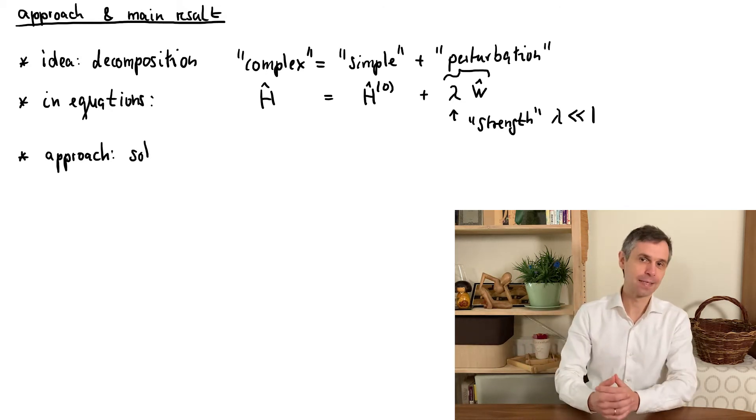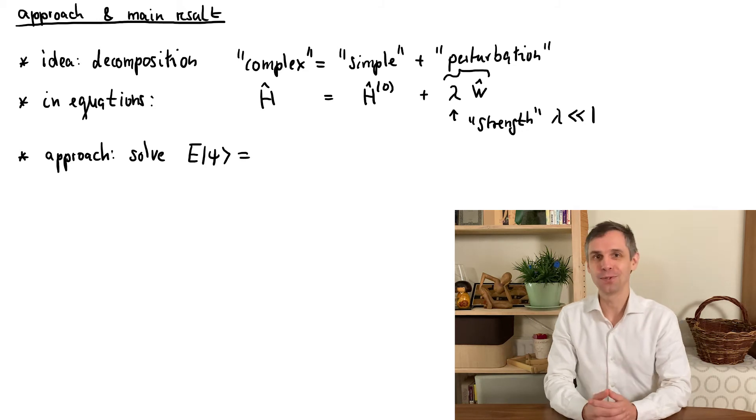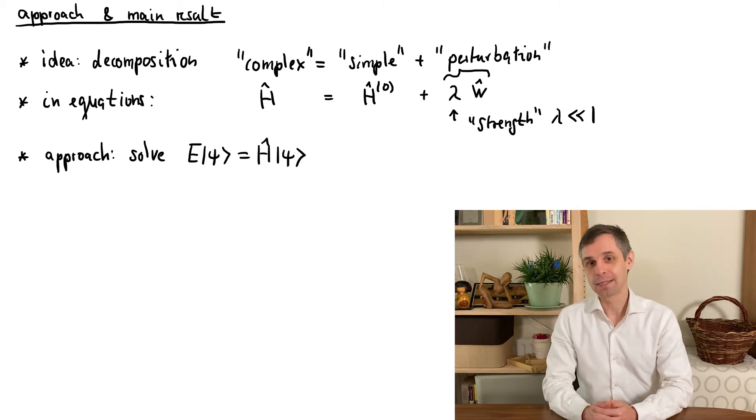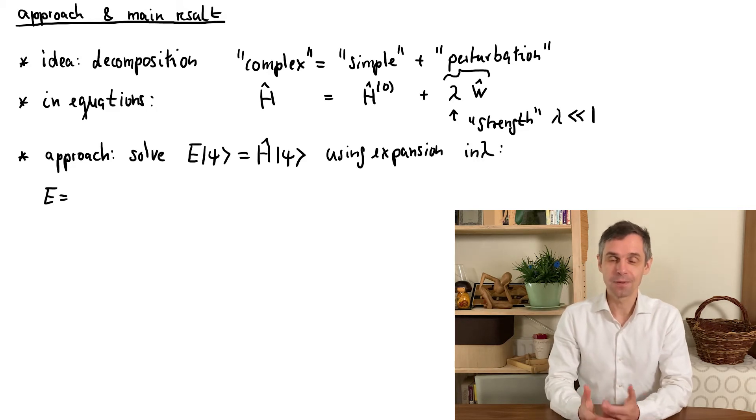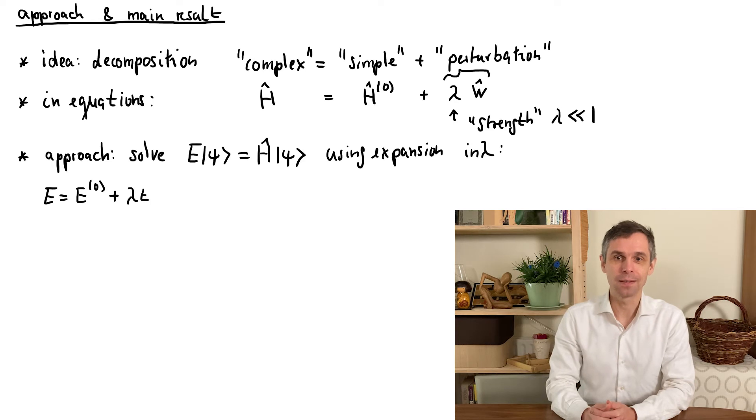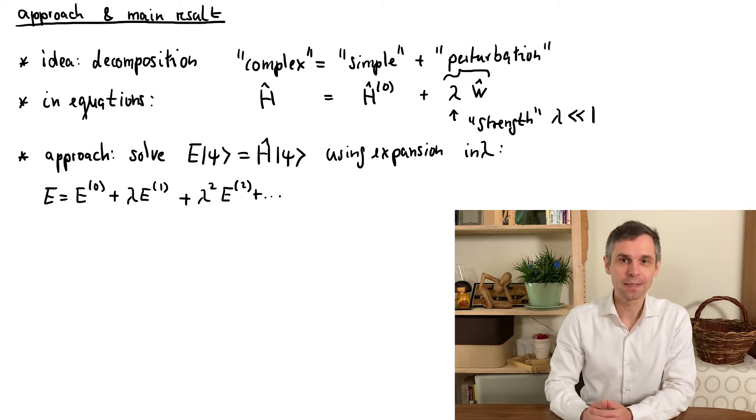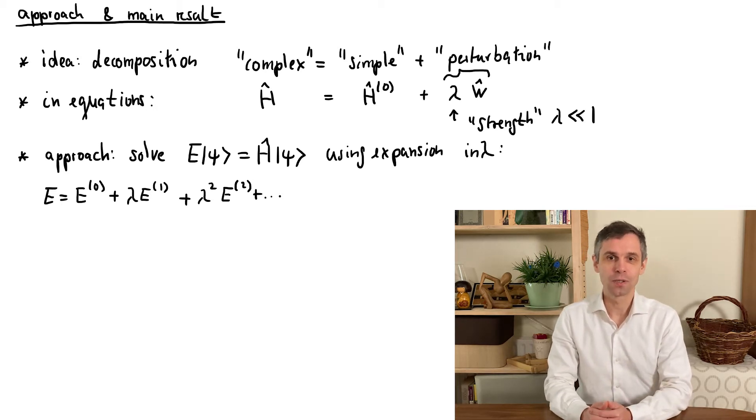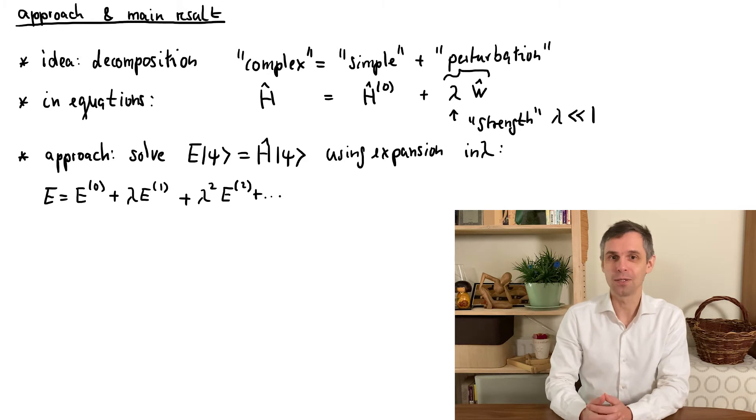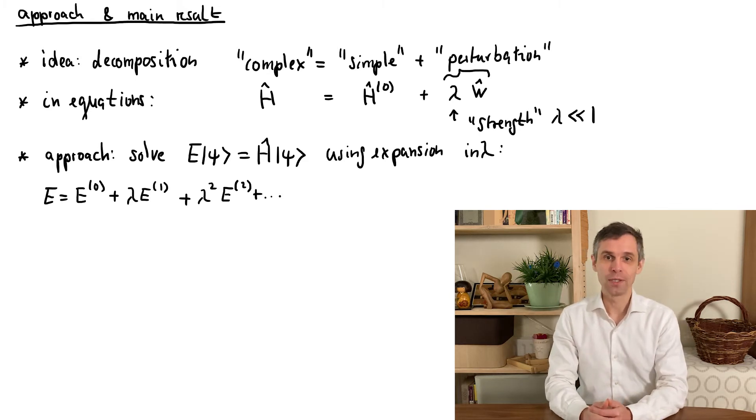Our goal is now to obtain an estimate of the energy in an eigenstate of our new system. And we expect that this energy is close to an energy of a state in the simpler system. But differs by some corrections that depend on the strength of the perturbation. We are mainly interested in the leading term of this difference, but in some cases also need to take higher order corrections into account. As shown here the different orders are distinguished by superscripts.